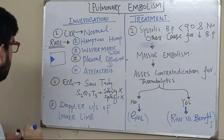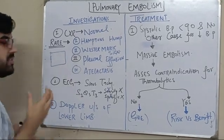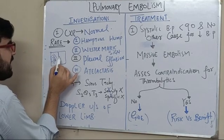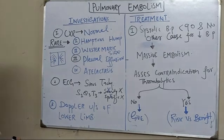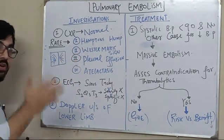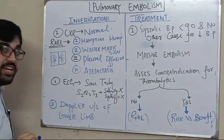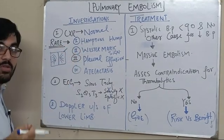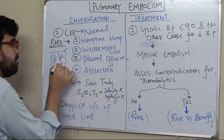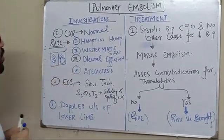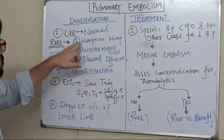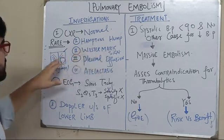The next is the Westermark sign. If there is pulmonary embolism, the vessels are blocked. On a normal chest X-ray you see blood vessels extending from the hilum. The Westermark sign is better appreciated on CT scan, but can be picked up on a good quality chest X-ray film. It means there are decreased vessels — vessels are missing because there is no flow. This is called focal oligemia, meaning decreased blood flow.